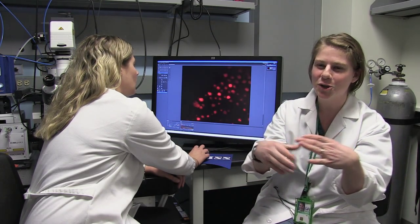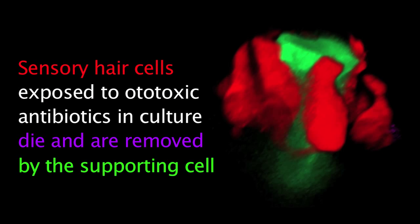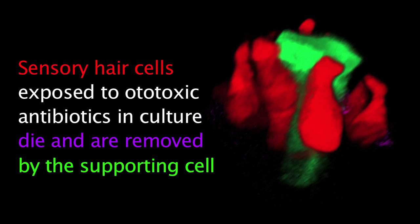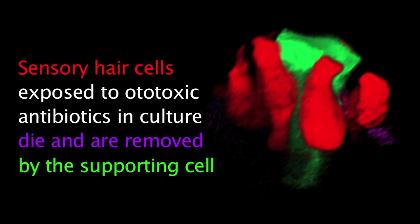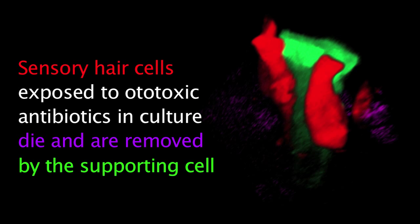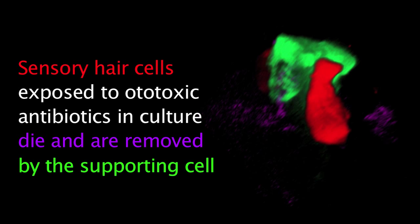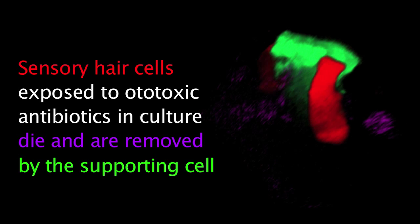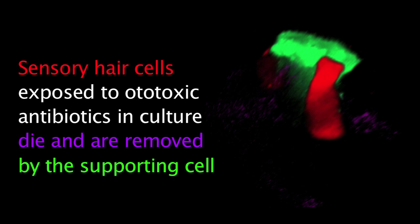The supporting cell comes in and squeezes that hair cell right at the top, just under the very top, and sort of breaks that neck, decapitating that hair cell. And then it comes in and cleans up the rest of that dead hair cell, sort of keeping the tissue relatively clean. And so we image that process and we see how it differs depending on which drug we're giving the tissue.